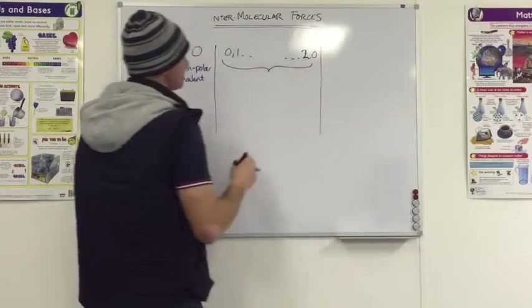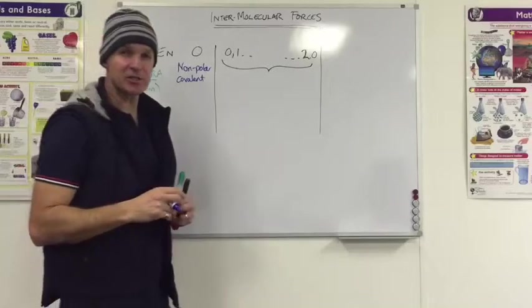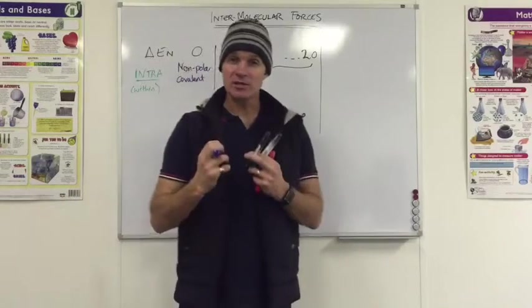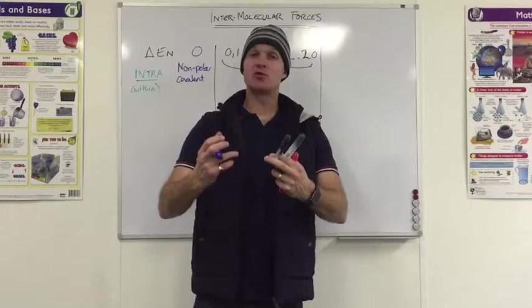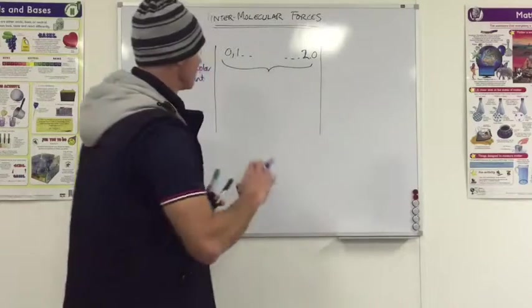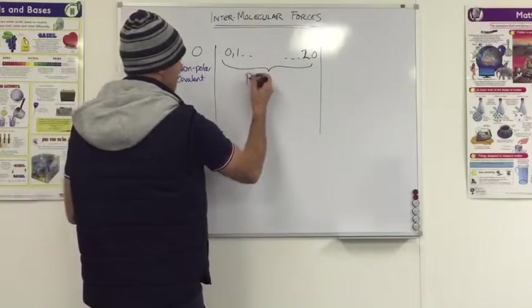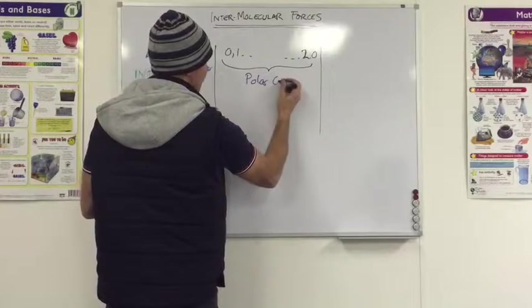Now there is a difference between the two electronegativities. So one of the atoms is going to be wanting those electrons more than the other, therefore drawing it towards itself and becoming negative. We're going to have polarity resulting. So that is going to result in a polar covalent bond.